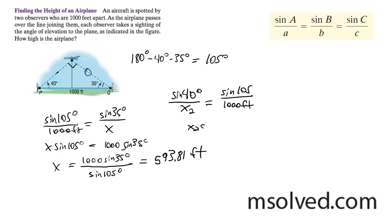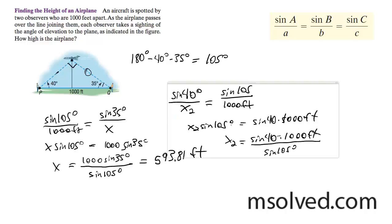I get x2. x2 is equal to this. And this gives us 665 point, roughly 5 feet.